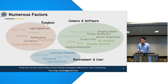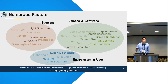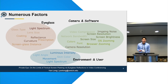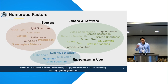There are many factors that could affect the reflection quality. These include software factors such as the zoom ratio of your operating system or browser, environmental factors like the lighting in the room, and eyeglass-related factors like the curvature of the glass and the distance between your glasses and the screen.